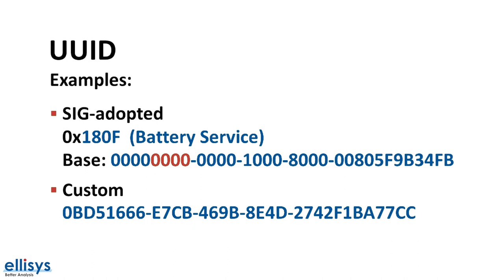Let's look at some examples of UUIDs. Here's an example of a UUID for a Bluetooth SIG adopted service called the battery service. UUIDs of SIG adopted attributes all have a common base UUID, shown here. The 16-bit UUID replaces the four digits highlighted in red. In the case of a custom UUID, it will be represented by the full 128-bit number. The one restriction is that a custom UUID cannot share the base or conflict with the SIG adopted UUIDs.